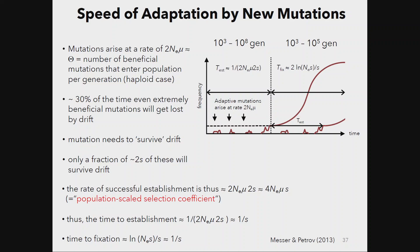Yesterday we finished by talking about hard sweeps versus soft sweeps. I showed a slide with the rate of successful establishment of a beneficial mutation, which involves 4NEμS — where we call 4NEμ theta, a measure of genetic variability, multiplied by S, the selection coefficient. When a new mutation arises it has a high likelihood of being lost by drift, but if it survives this stochastic phase, selection can drive it up in frequency.